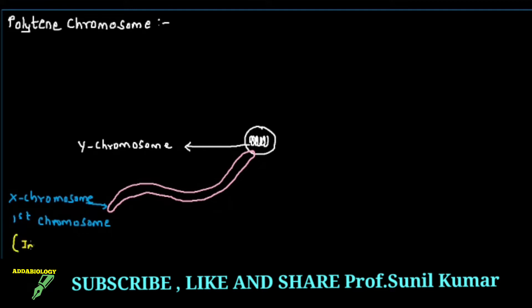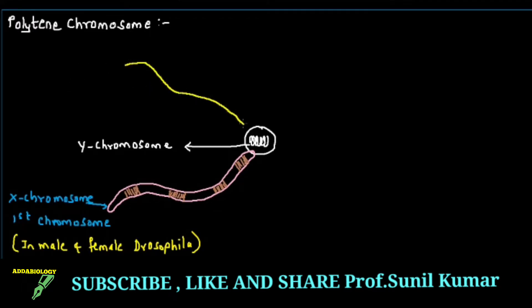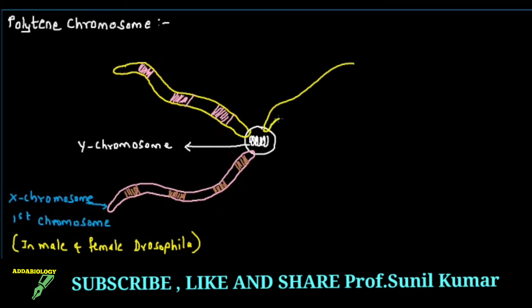The X chromosome is found in both male and female Drosophila. Now I draw chromosome 2. Remember the dark band has more DNA and less RNA, while the light band indicates less DNA and more RNA. There is continuous replication going on but no cell division. This polytene chromosome is seen during the interphase stage — very important to remember.